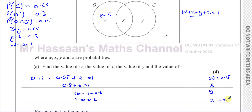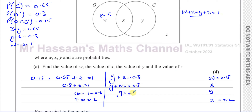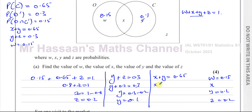We now know that Y plus Z equals 0.3, and Z is 0.2. So Y plus 0.2 equals 0.3, meaning Y equals 0.1. And we know that X plus Y equals 0.65, so X plus 0.1 equals 0.65. Therefore X equals 0.55. So we now have all the values in our Venn diagram: W = 0.15, X = 0.55, Y = 0.1, Z = 0.2.